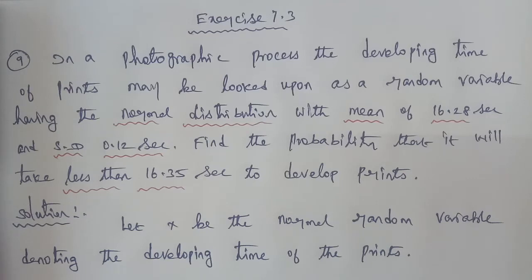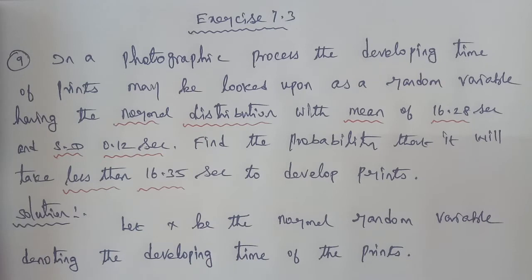Hi students, I am Gopinath. In 12th business maths, exercise 7.3, question number 9. Given question: in a photographic process, the developing time of the prints may be looked upon as a random variable having the normal distribution with mean 16.28 seconds and standard deviation 0.12 seconds. Find the probability that it will take less than 16.35 seconds to develop the prints.